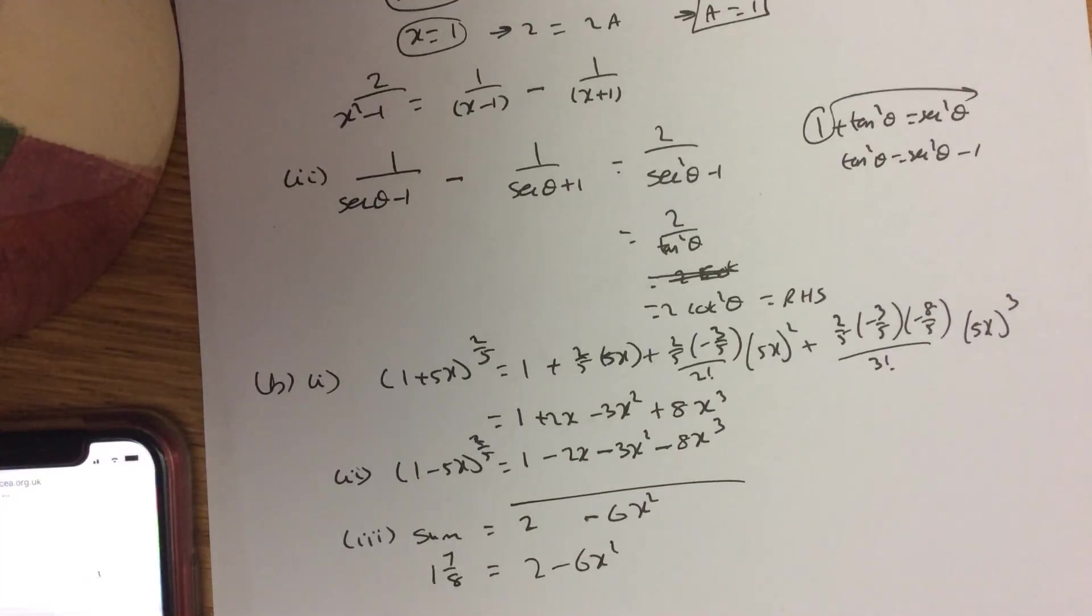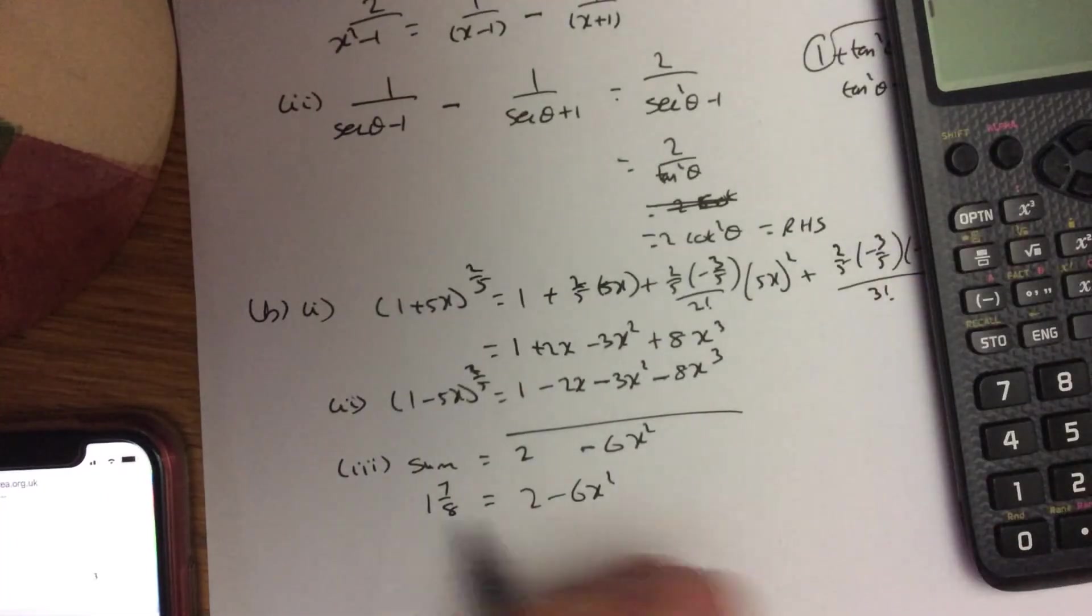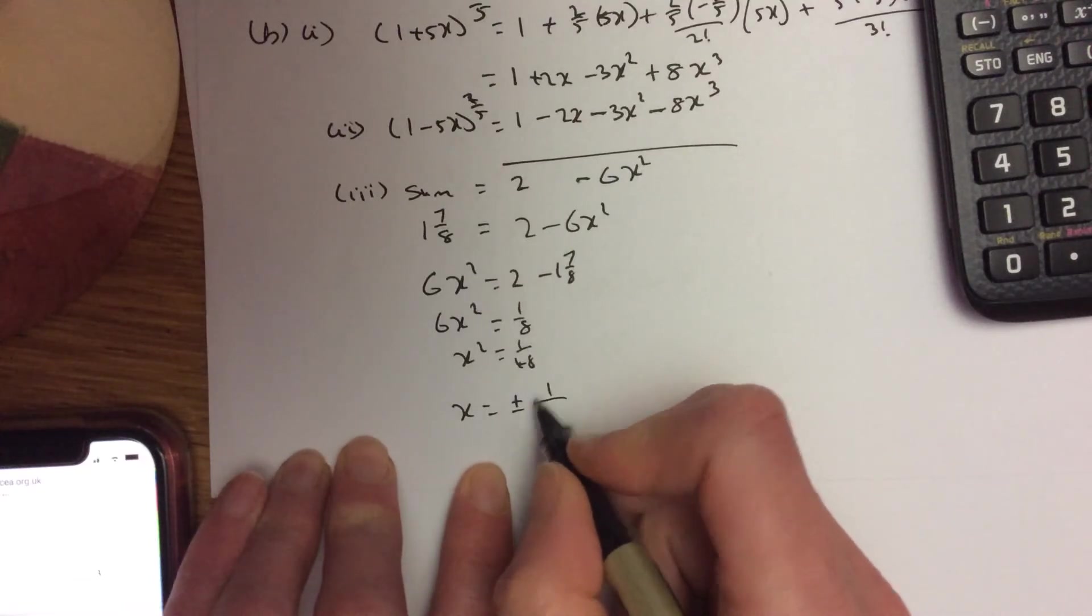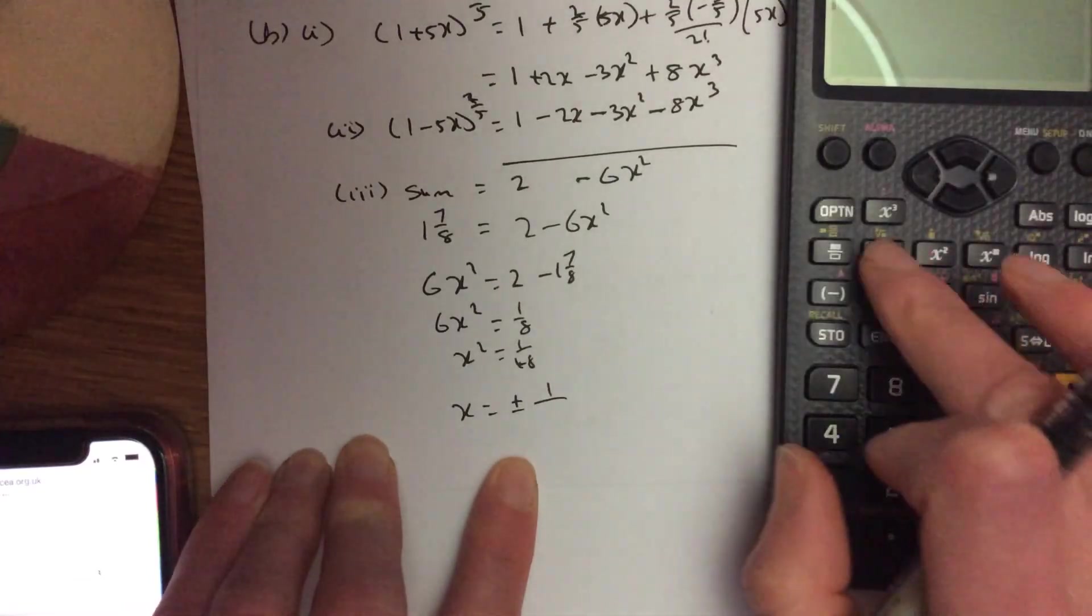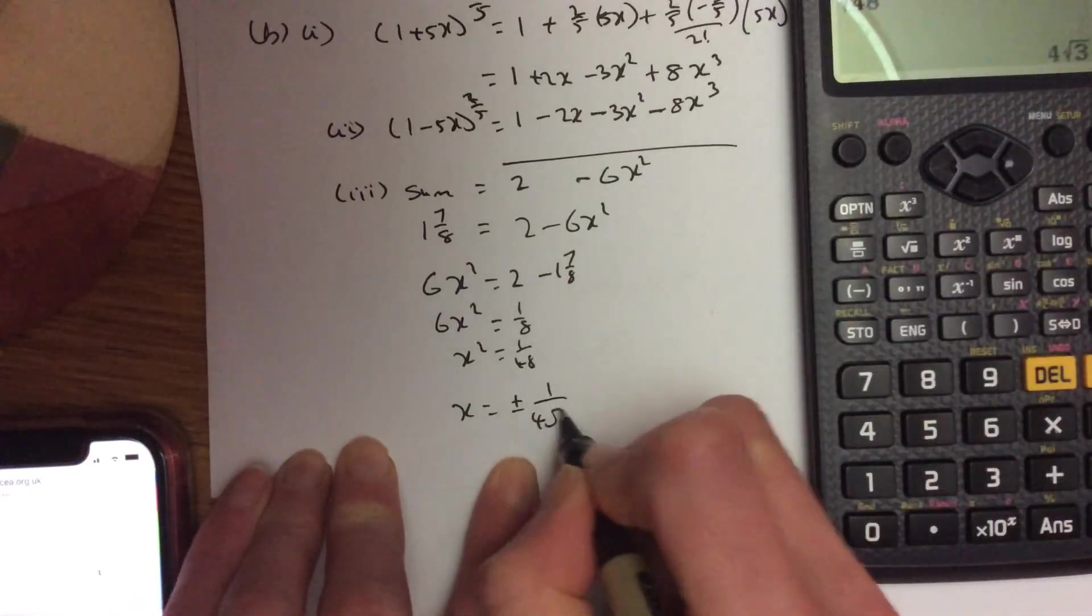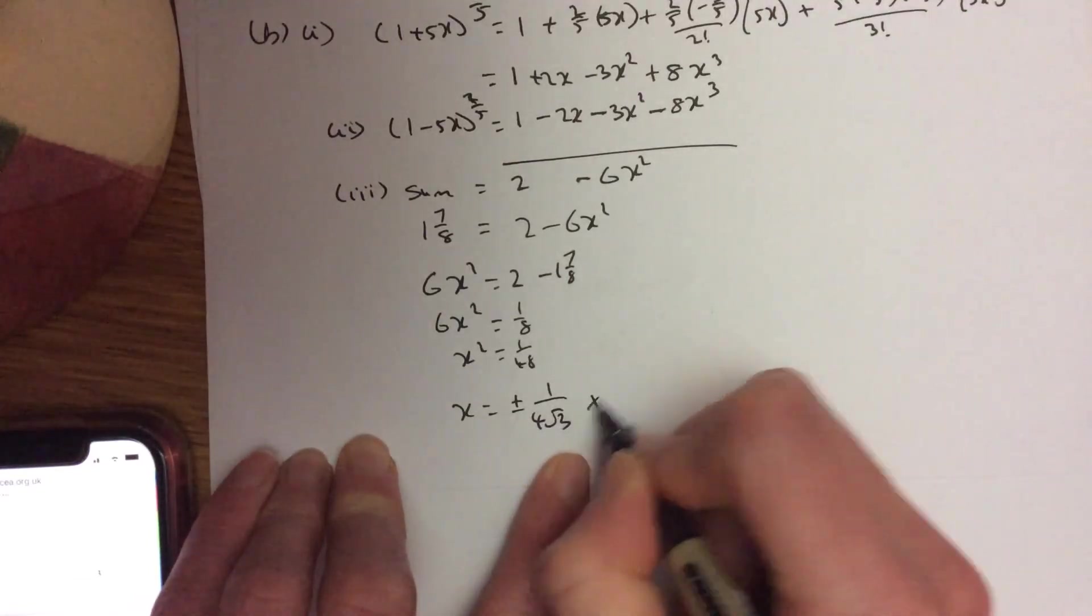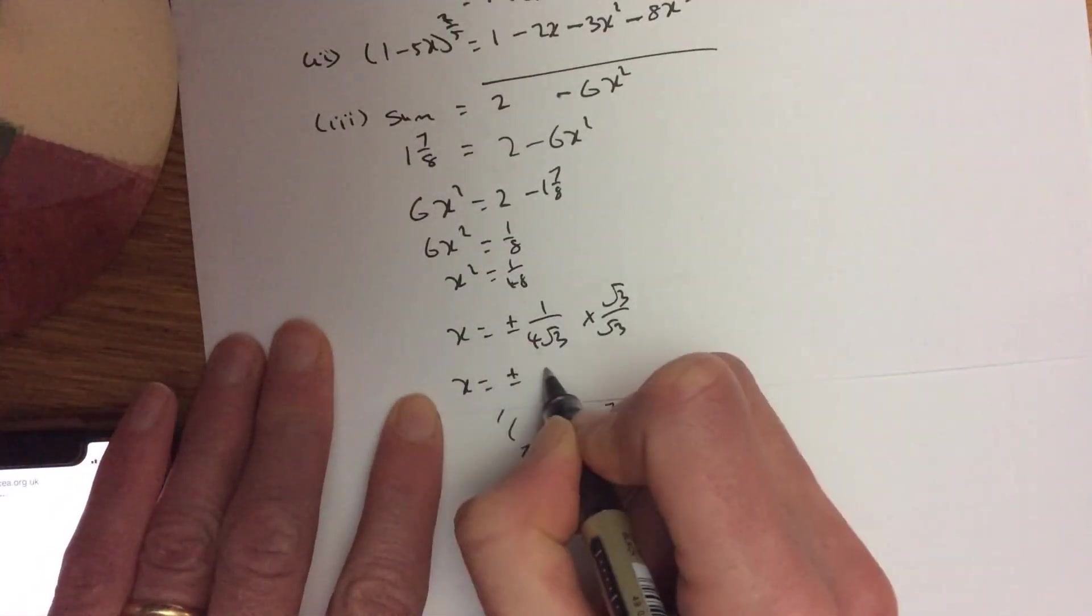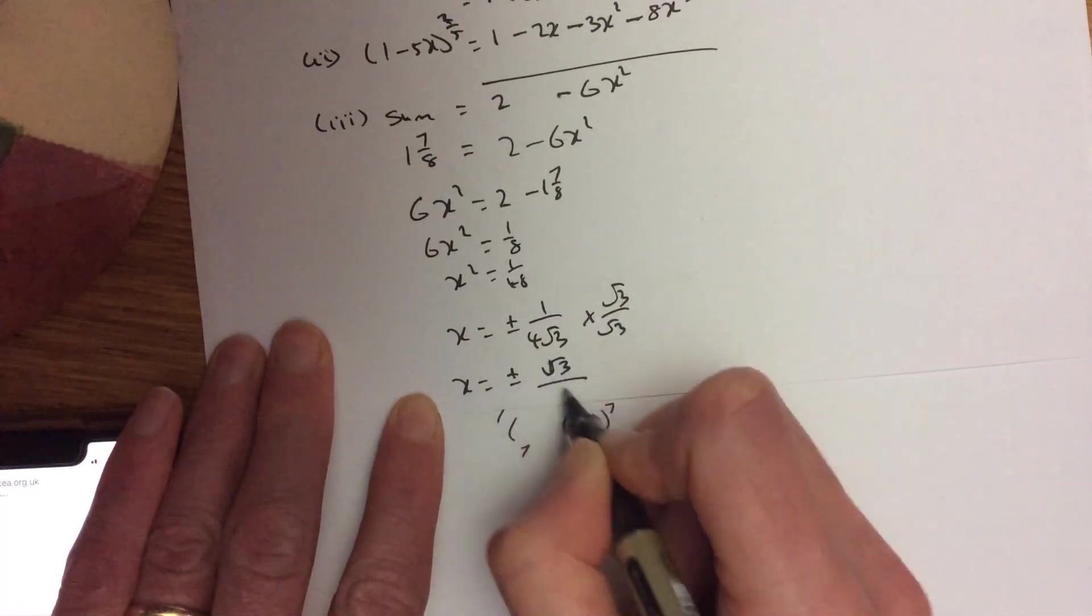So just working with your fractions here, bring this across. So 6 over 25 x squared equals 2 minus 1 and 7 eighths. So 6 over 25 x squared equals 1 eighth. So x squared equals 1 over 48. So x equals plus or minus the square root of 1 over 48. And the square root of 48 is 4 root 3. Now, I would never leave a root in the bottom, so you would rationalise that by multiplying by root 3 over root 3, giving you x equals plus or minus root 3 over 12.